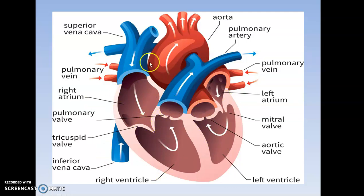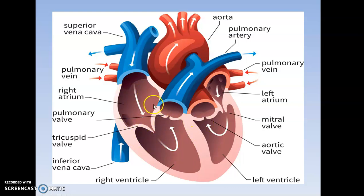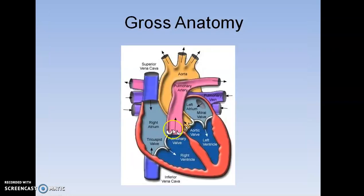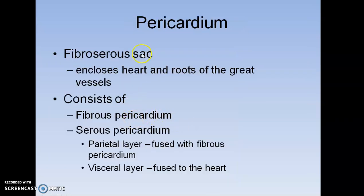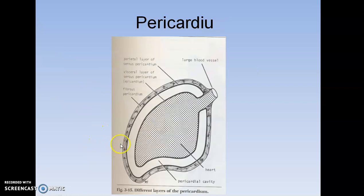This is the general structure of our heart, and it is made up of three layers. The pericardium is a fibro-serous sac that encloses the heart. It includes the fibrous pericardium and serous pericardium. This is the general structure of our pericardium.